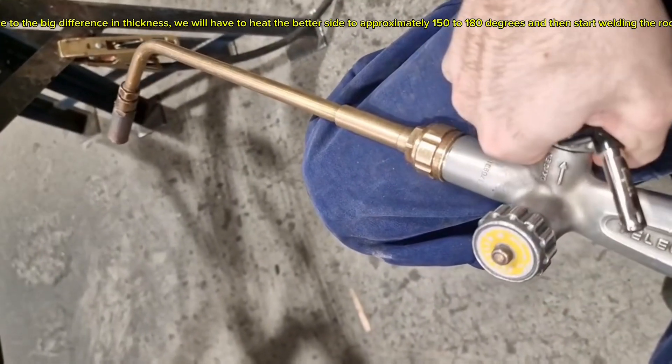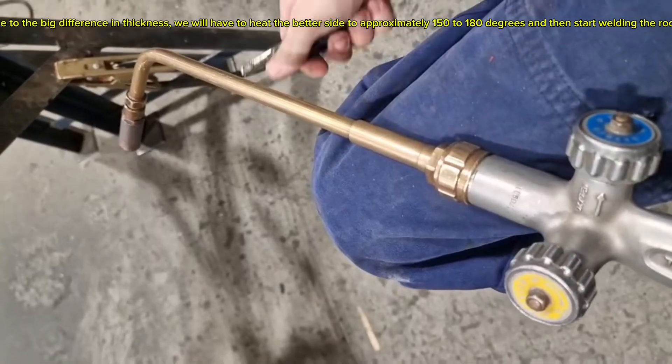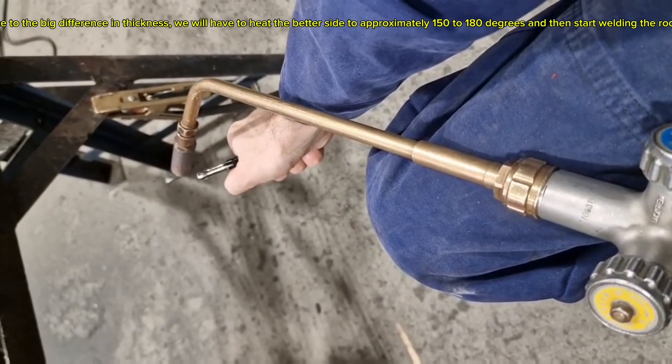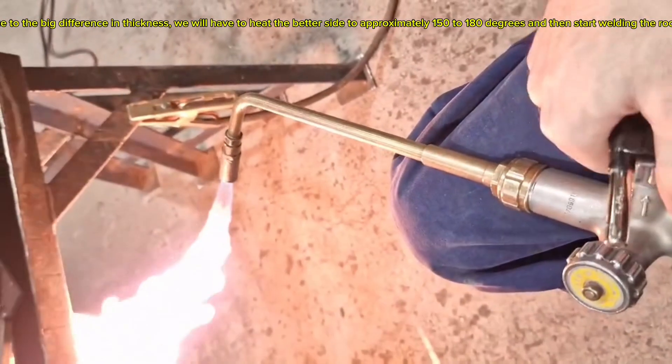Due to the big difference in thickness, we will have to heat the thicker side to approximately 150 to 180 degrees and then start welding.